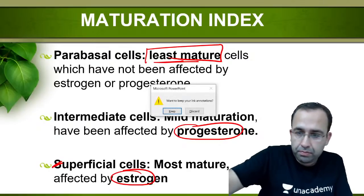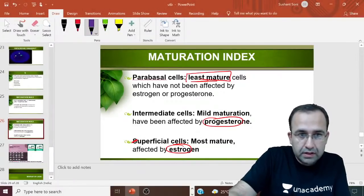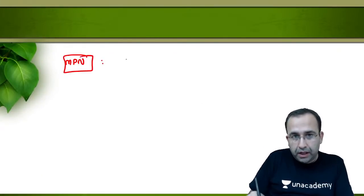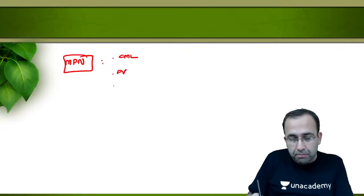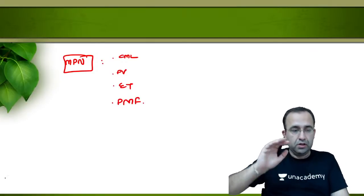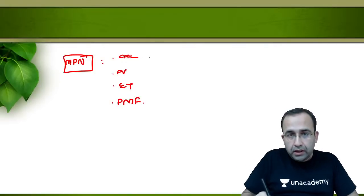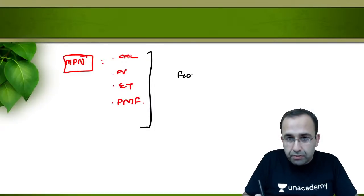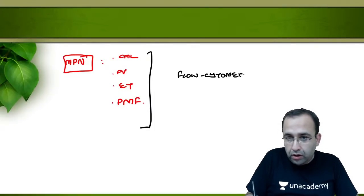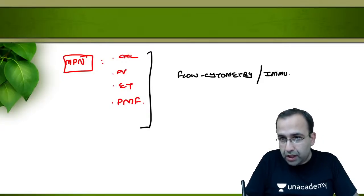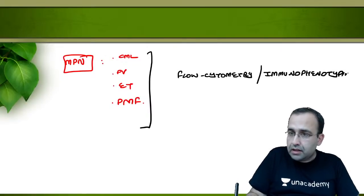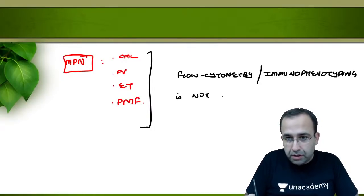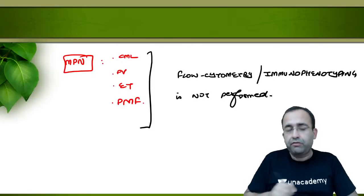Important prospective question: immunophenotyping or flow cytometry is not performed in myeloproliferative neoplasms (MPN). There are four MPN: CML, polycythemia vera, essential thrombocytosis, and primary myelofibrosis. Flow cytometry is not indicated in any of the MPN.